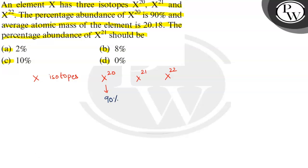You know that sum of the percentages of these isotopes will be 100. So we have 90% means how much left? 100 minus 90, 10% left means this total X^21 and X^22 should be 10%.